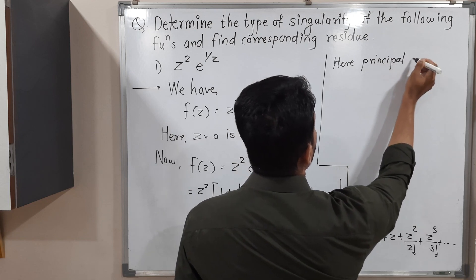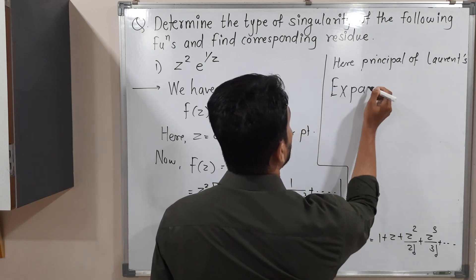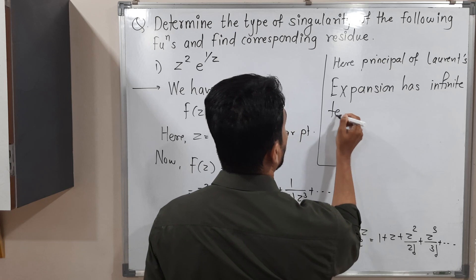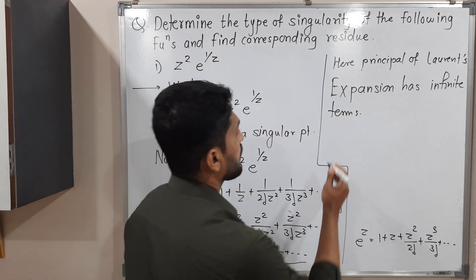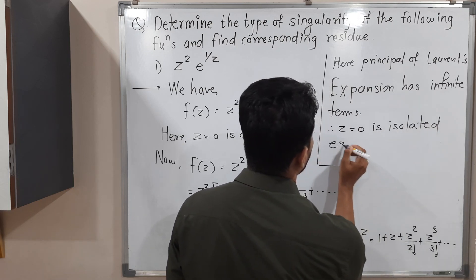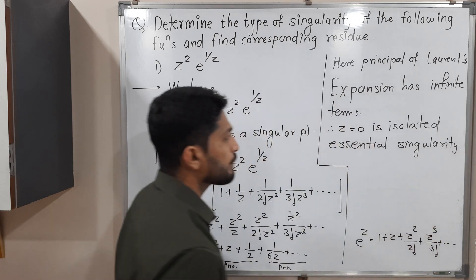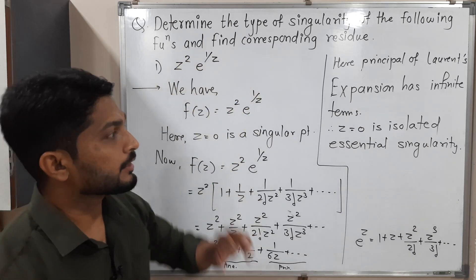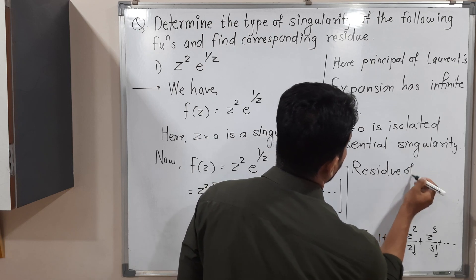The principal part of the Laurent expansion has infinitely many terms, so therefore z = 0 is an isolated essential singularity. We are not getting a pole here. Our next task is to find the corresponding residue.